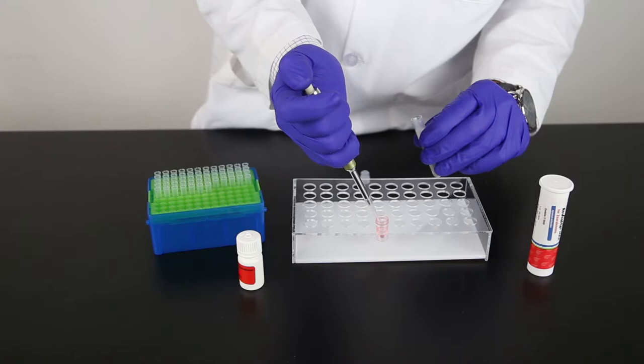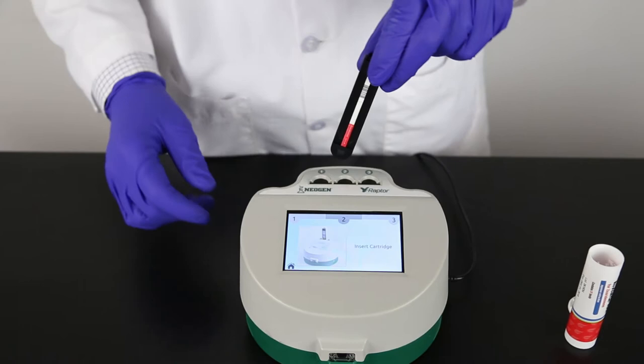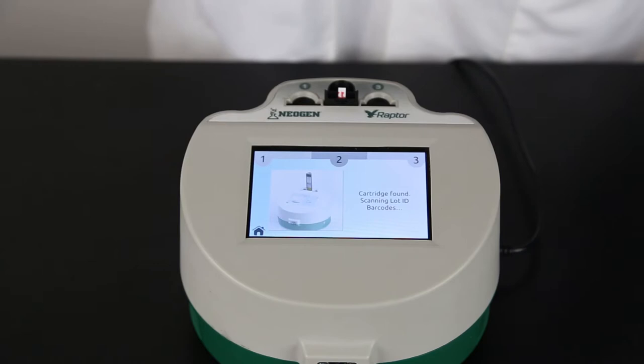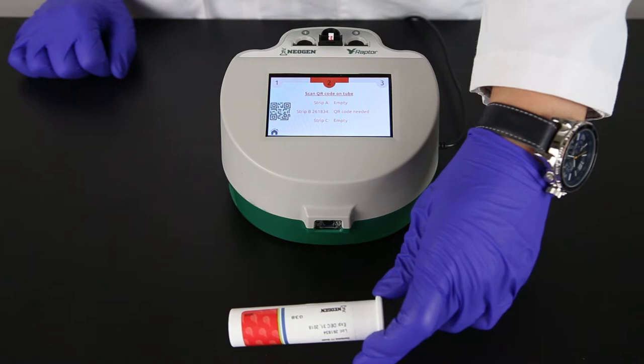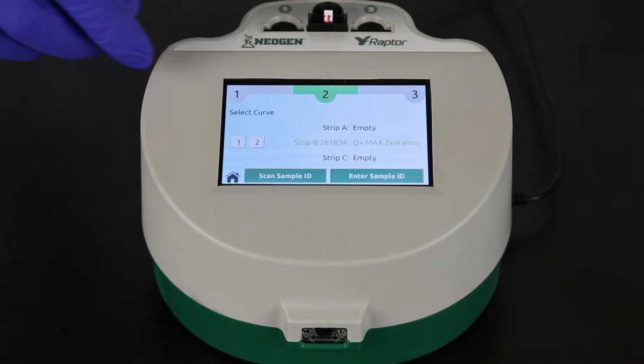Place a test strip into the Raptor cartridge. Place the cartridge in the Raptor system. You can use any of the three ports. The Raptor system reads the barcode on the strip. If you need to add the lot information to the system, the scanner on the front of the system will turn on automatically. Scan the QR code located on the strip tube. Select Curve 2 for corn.